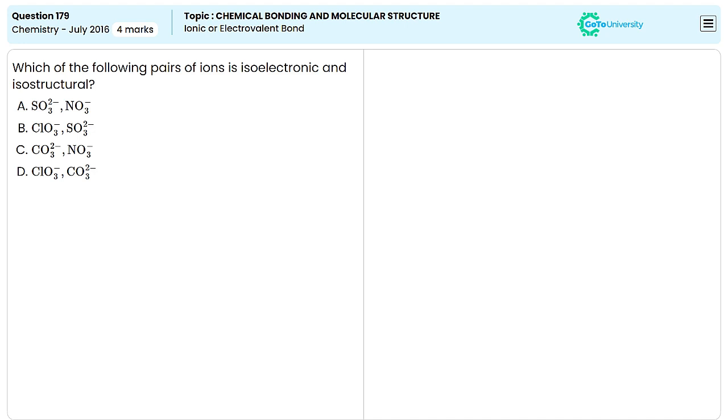In this question, different pairs of ions are given. We have to identify the pair which contains the species which are isoelectronic and isostructural in nature.